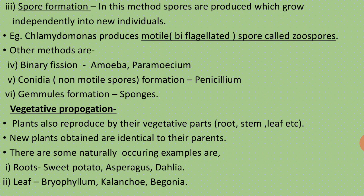Spores are developed into new individuals. An example is Chlamydomonas, which produces motile spores that are biflagellated — having two flagella — and are motile due to the presence of flagella. These motile spores are called zoospores. Other methods also present include binary fission in Amoeba and Paramecium. Conidia occur in fungi — conidia are non-motile spores produced by fungi, for example Penicillium. Zoospore formation occurs in algae.